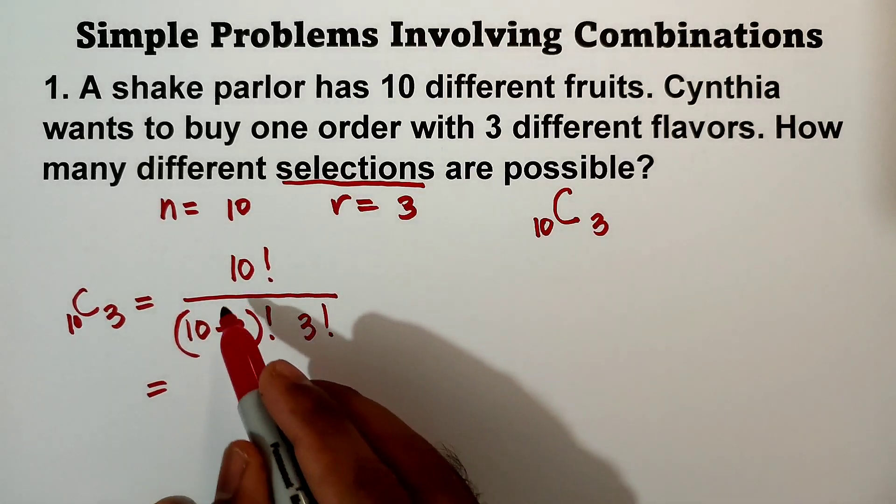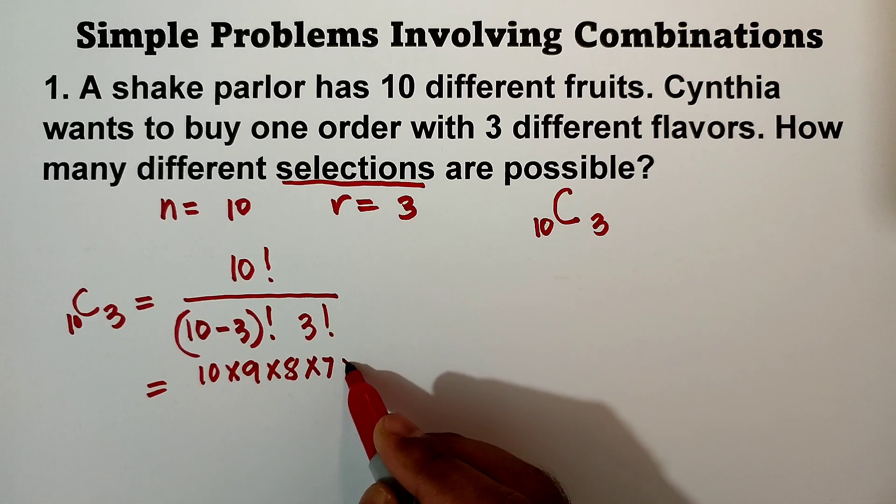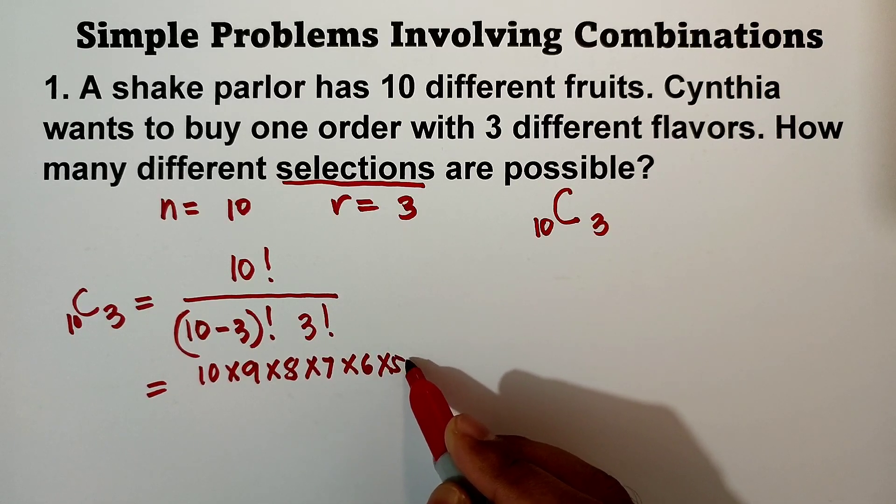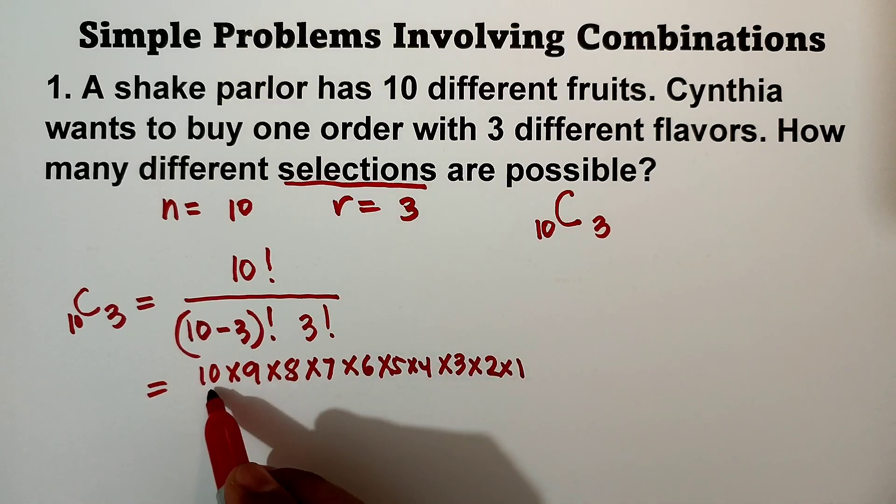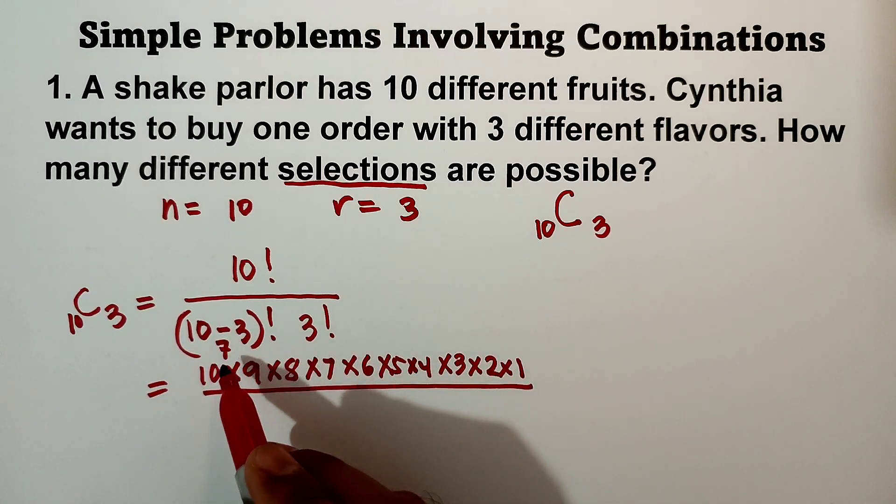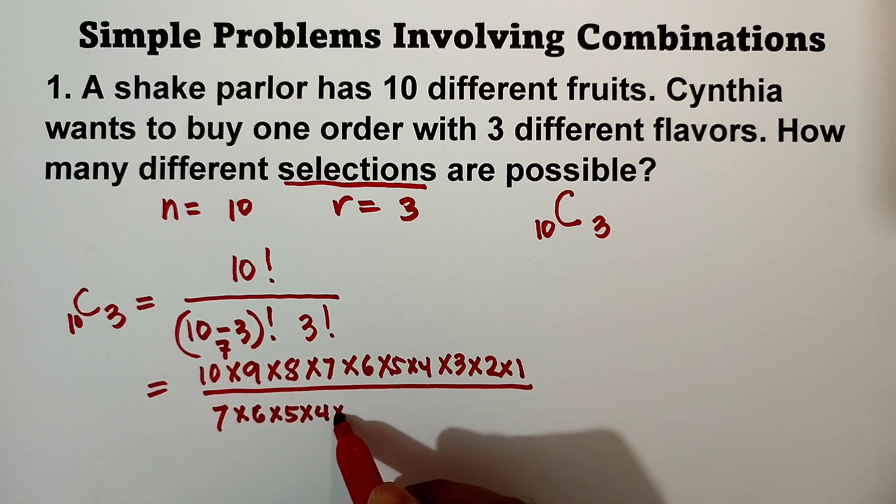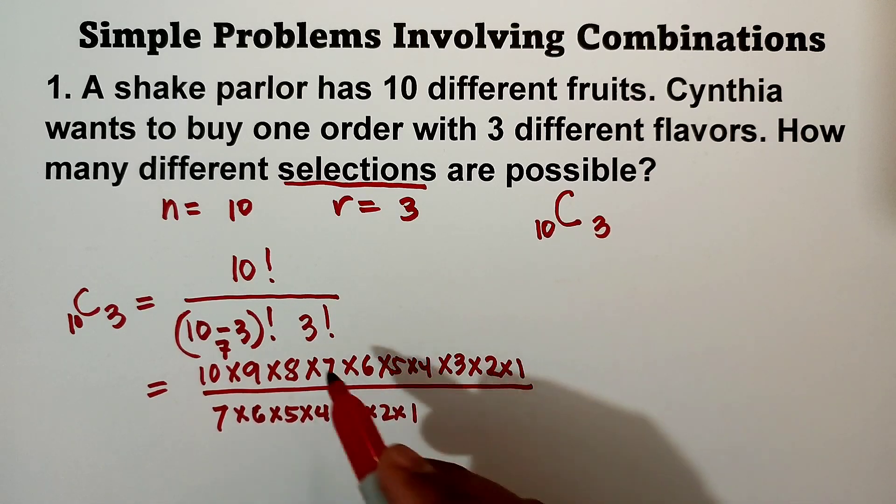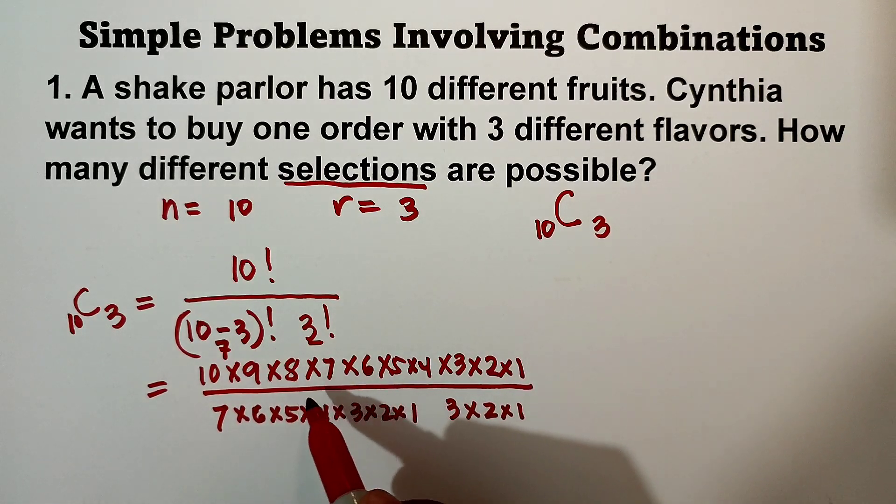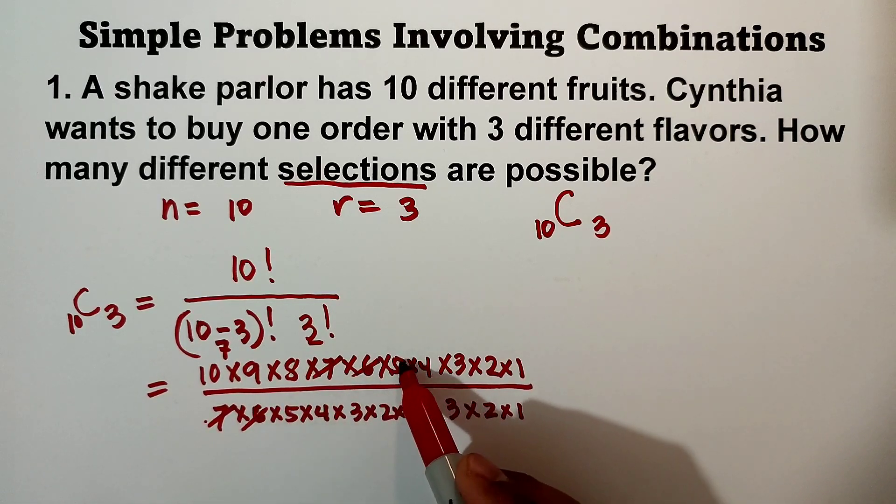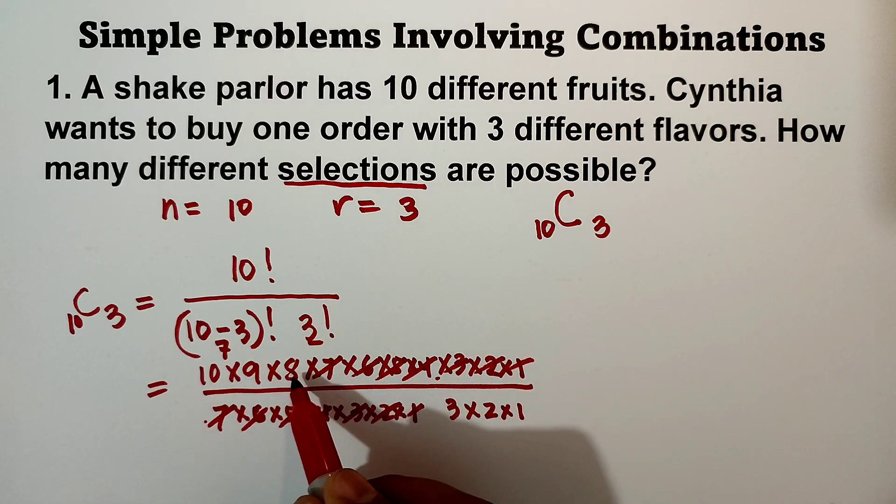And then of course, expand the 10 factorial - that is 10 times 9 times 8 times 7 times 6 times 5 times 4 times 3 times 2 times 1, all over 10 minus 3 is 7 factorial, so 7 times 6 times 5 times 4 times 3 times 2 times 1, and then 3 factorial that is 3 times 2 times 1. Okay, so cancel out the same terms: 7, 6, 5, 4, 3, 2, and 1 will remain 10 times 9 times 8.